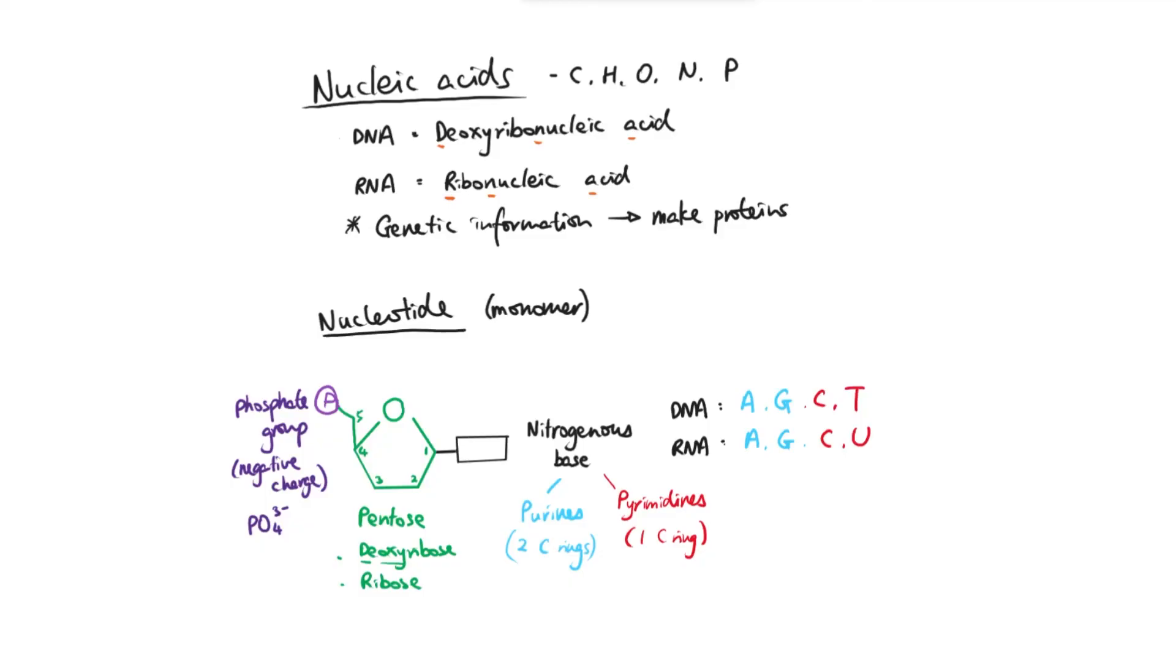But largely the five different types of bases can be classified as purines if they've got two carbon rings in it, or pyrimidines if they've only got one carbon ring. So examples of purines would be adenine and guanine, examples of pyrimidines would be cytosine, thymine, and uracil.